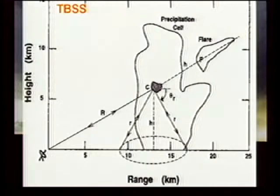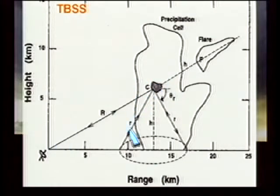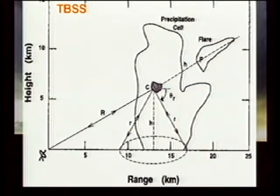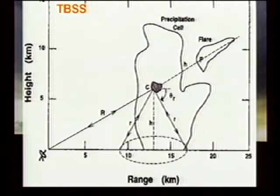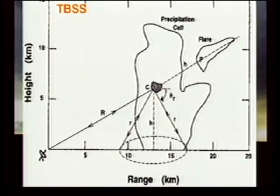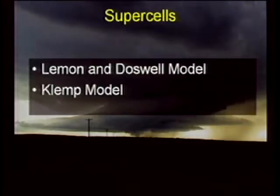With radar imagery and hail, you can get the three-body scatter spike, which is simply large hailstones with a wet hailstone — the pulse hits that, it's reflected down to the ground, back to the hailstone, and back to the radar, which provides that flare or spike that comes out of the back of the storm. When you see that, you often have to tilt up through various levels of the radar to see it, but that's a great indication that the storm contains hail, at least at the mid-levels. Now, depending upon your wet bulb zero height, a lot of that hail may melt before it even gets to the ground, but it's a good indicator that the storm contains hail within the mid-levels.